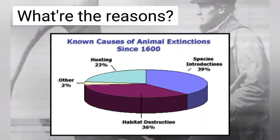What are the reasons? Known causes of animal extension since the 1600s: species introduction, 39%; habitat destruction, 36%; hunting, 23%; and other, 2%.